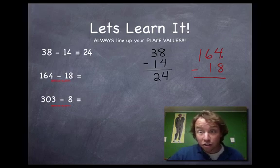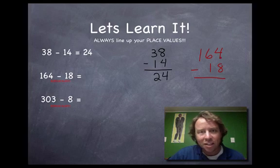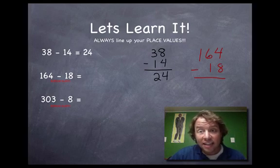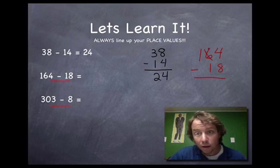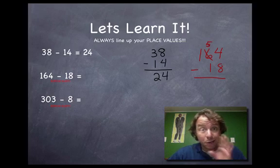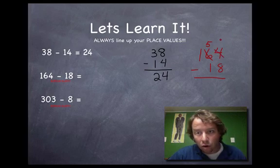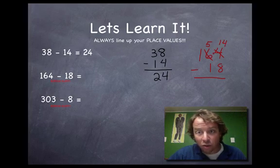Can you take 8 away from 4? No. If you had four dollars and someone said 'give me eight,' you couldn't. So you have to borrow. The 4 asks the 6 next to it for some. The 6 becomes a 5 — you take one away from it. Since that 6 is in the tens place, it's actually 60, so you're taking 10 away, going from 60 down to 50. Then you turn the 4 into a 14 by putting a 1 in front of it.